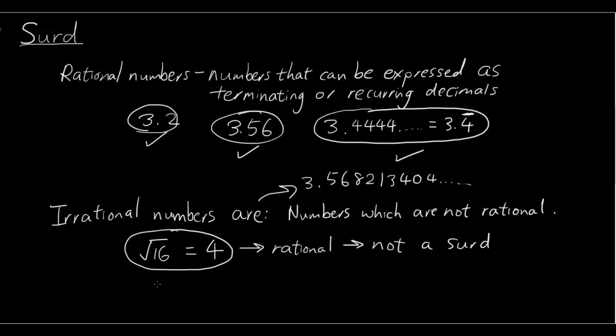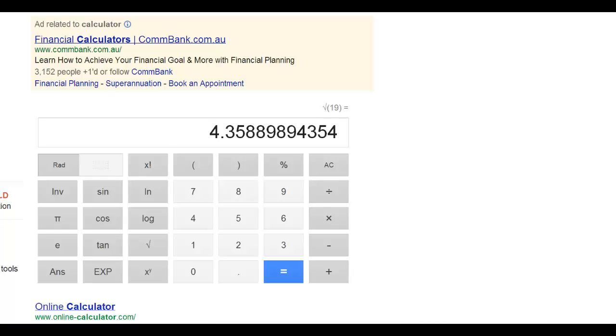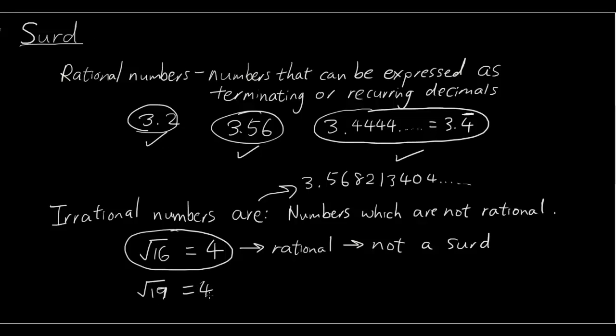So, if we have something like 4.35889, you can't write it as recurring decimals. So, it is irrational. And therefore, it is a surd.